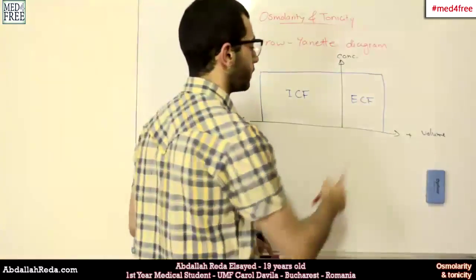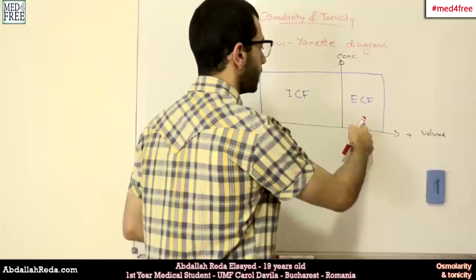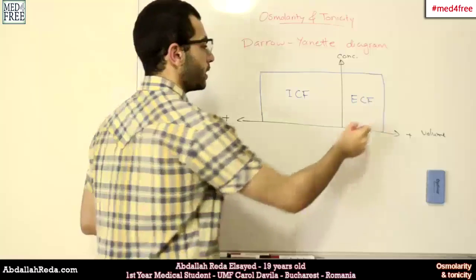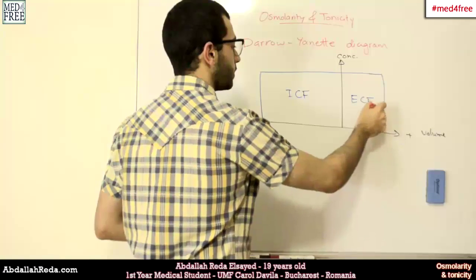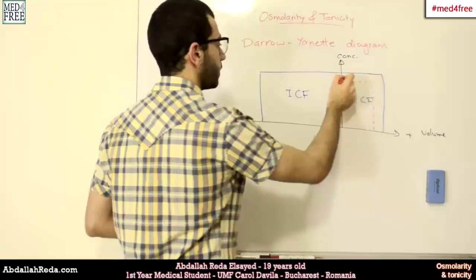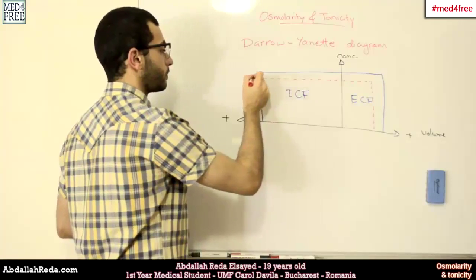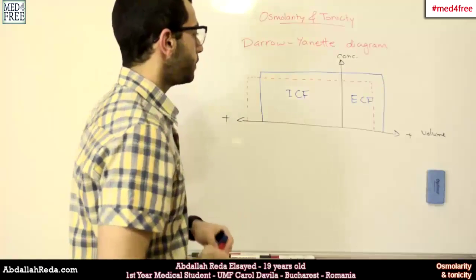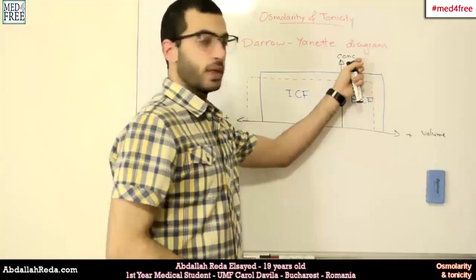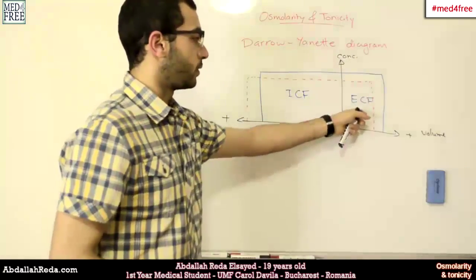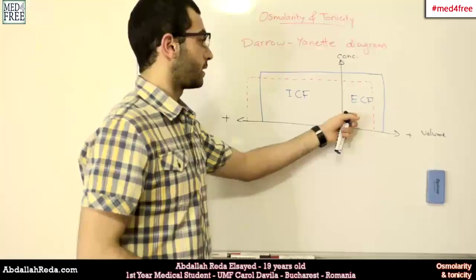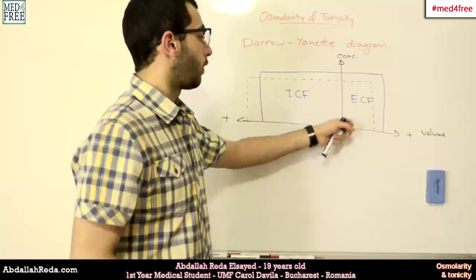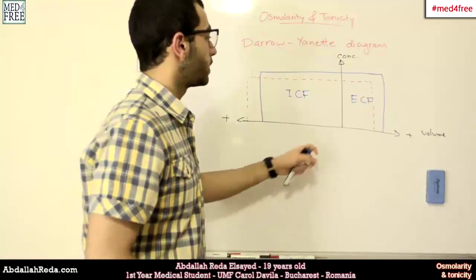For example, if the volume of the extracellular fluid decreased, and the concentration decreased, this will affect the intracellular fluid like this. If the concentration of the extracellular fluid decreased, and the concentration of particles would mean the concentration of particles.